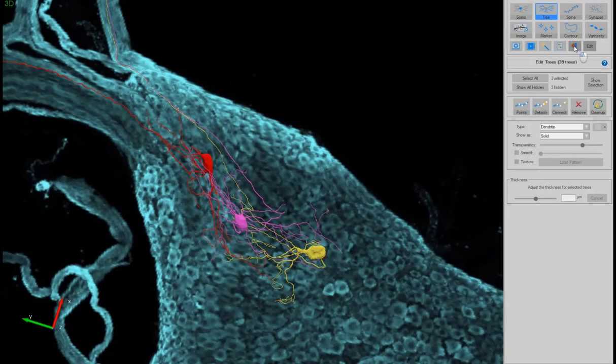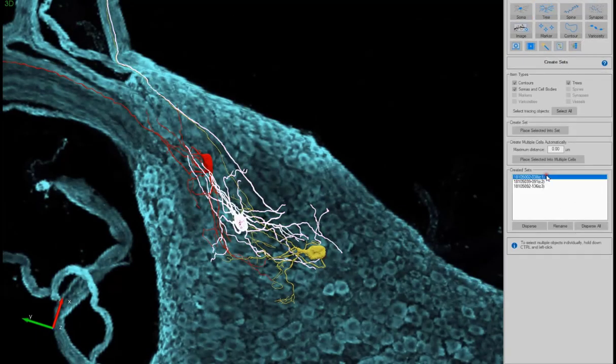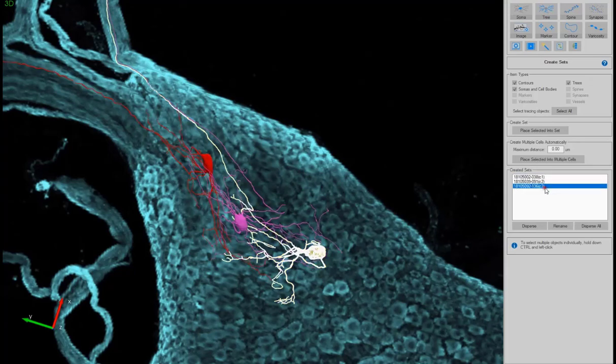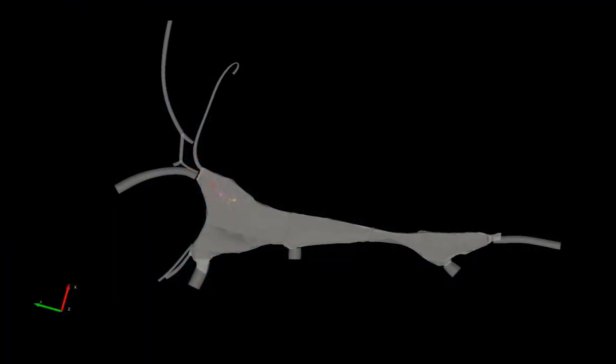By labeling the cells with the cell ID from the electrophysiological recording, the lab was able to link the physiological and morphological data to analyze the structure-function relationship of the cells.